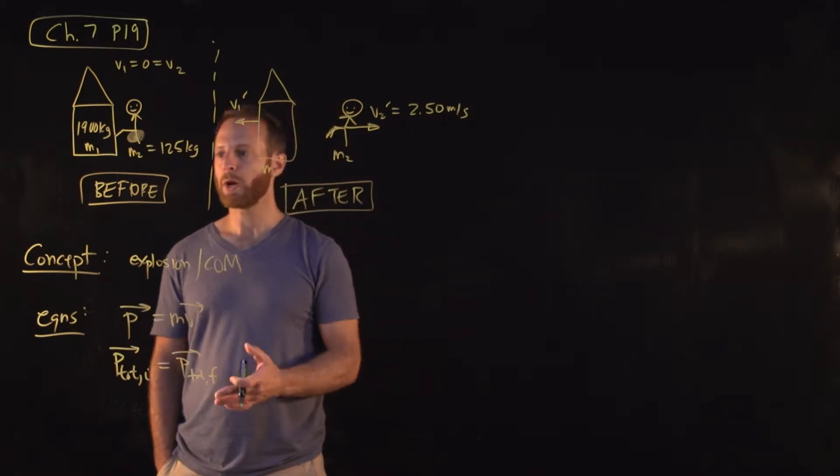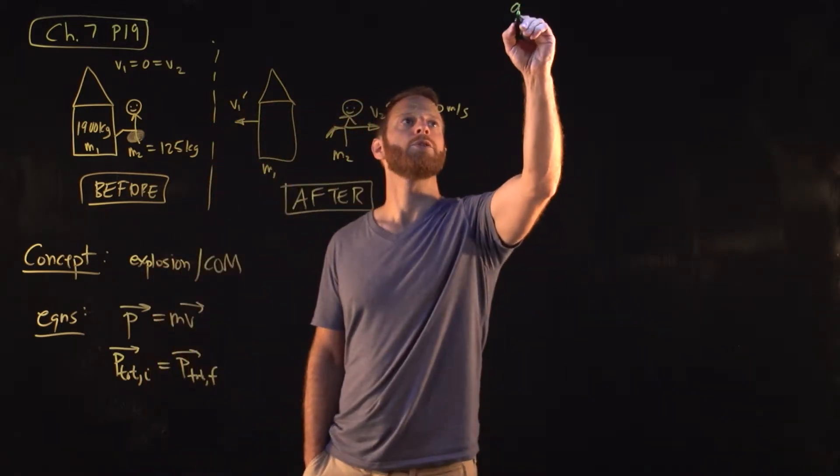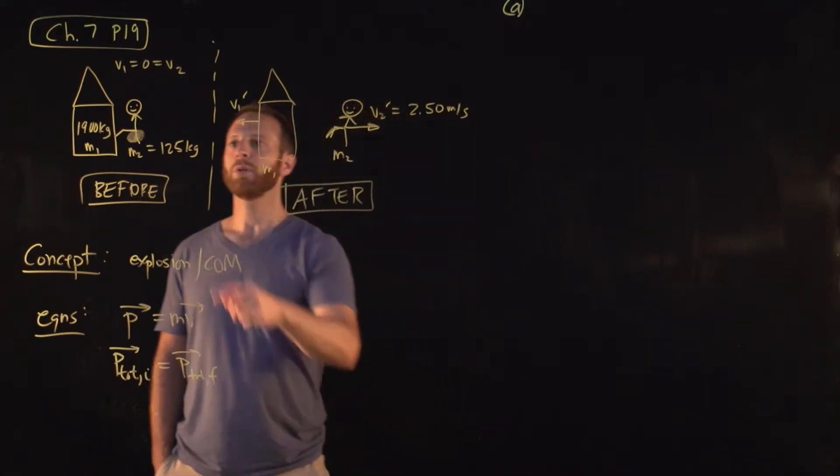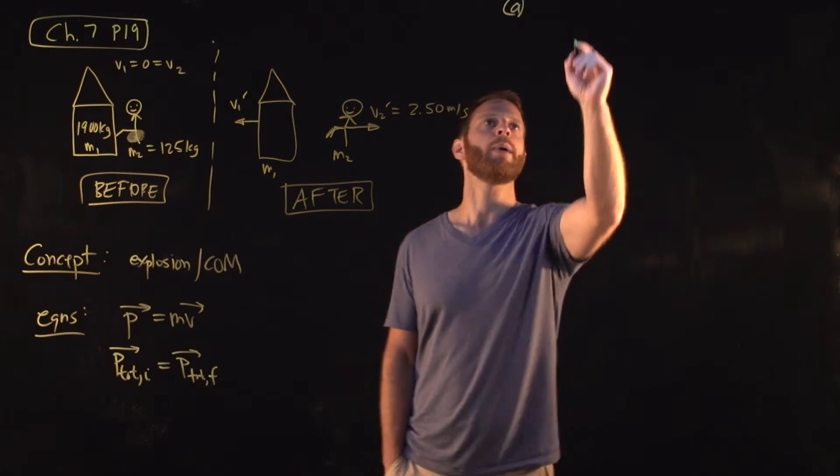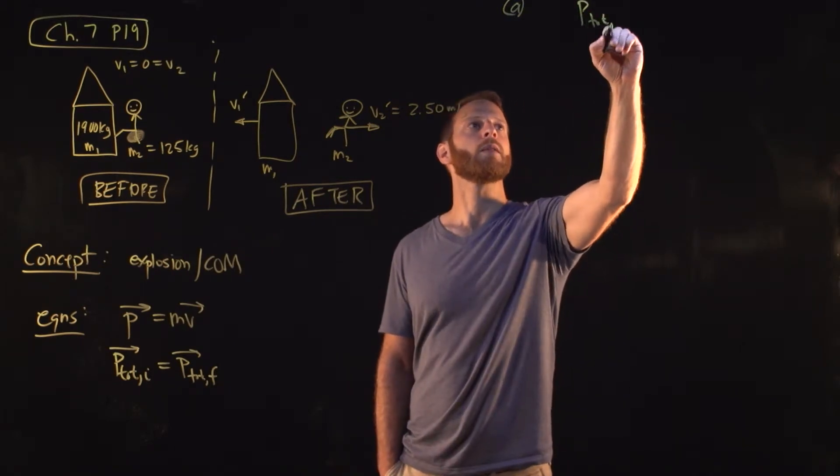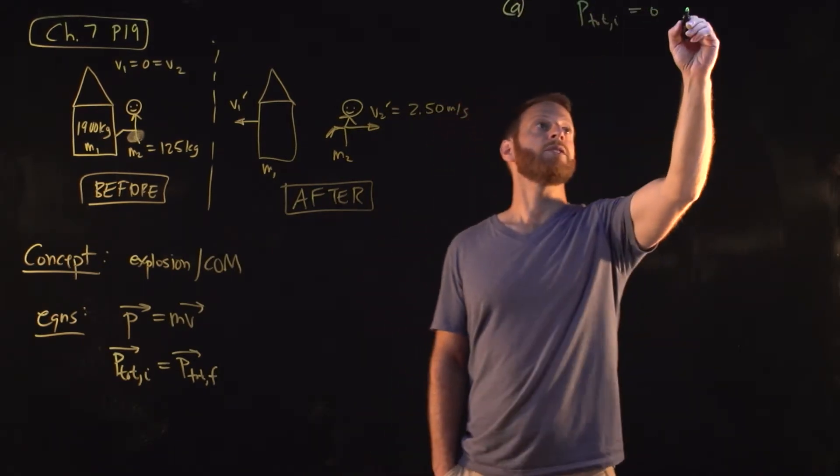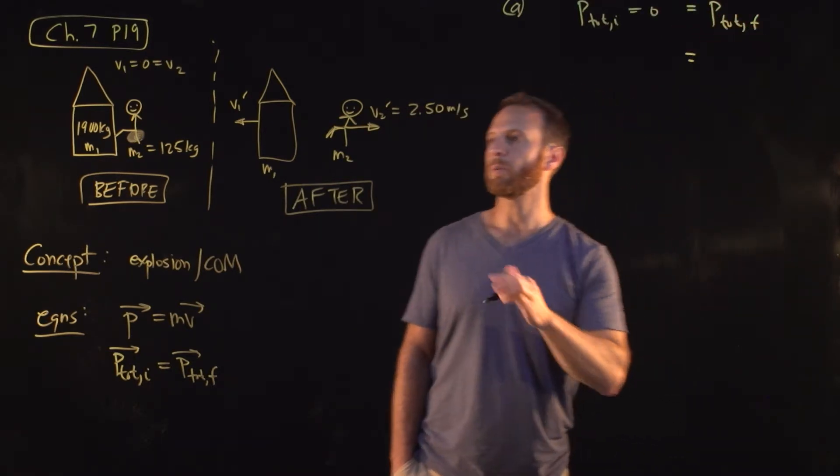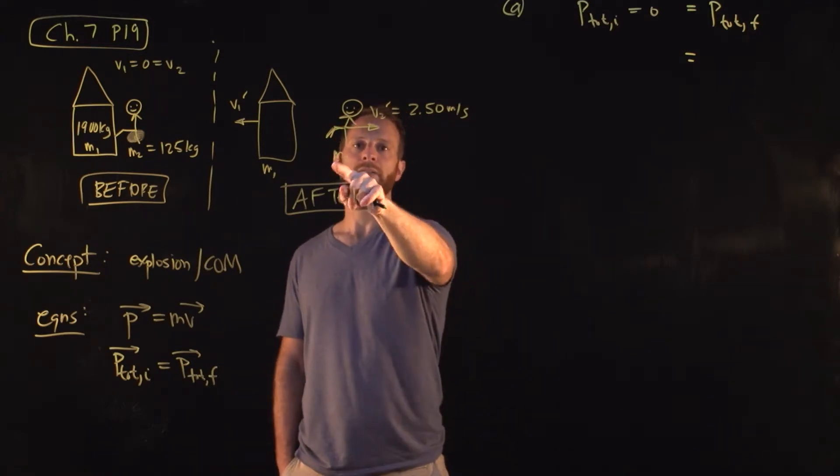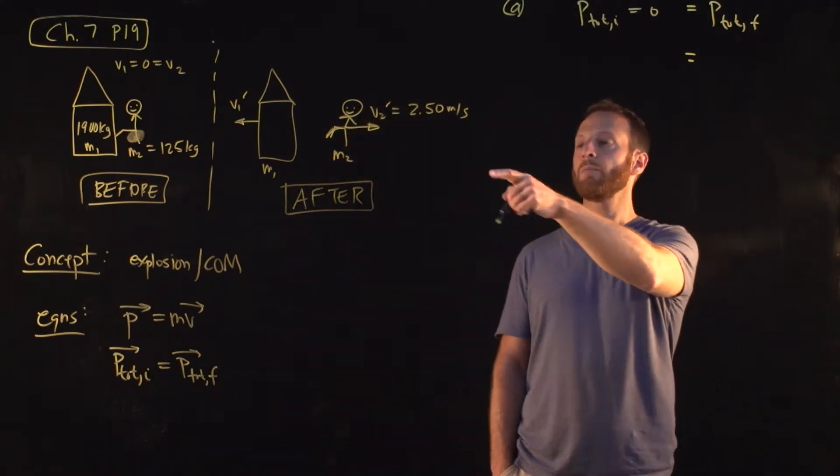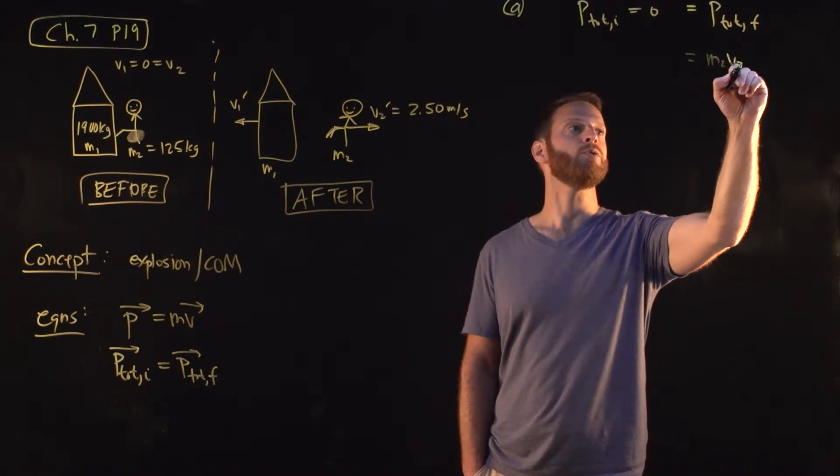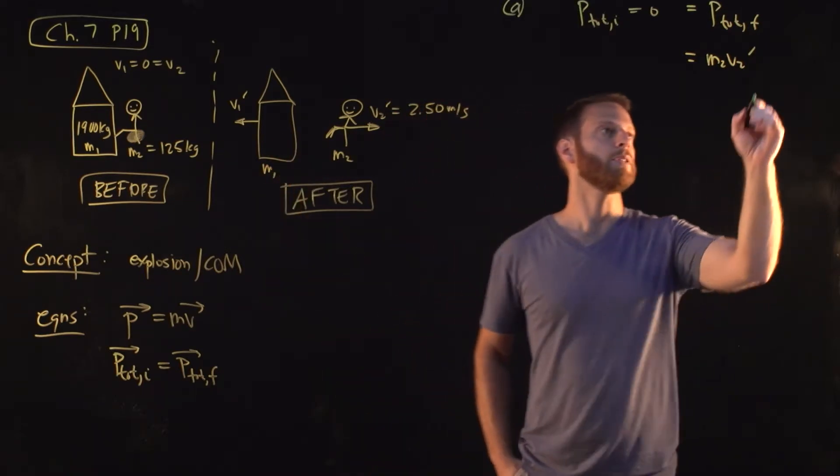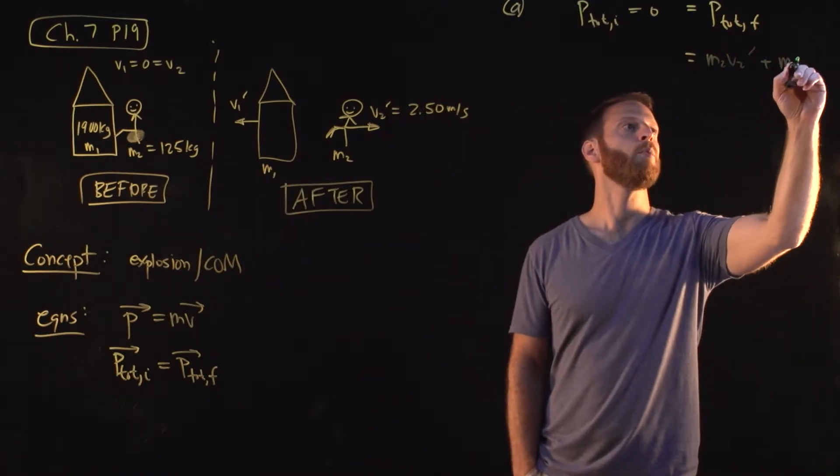All right, so let's go ahead and try to use this to do part A, to figure out what is V1 prime initially. We can write P1 plus P2, but look, we know that they're both zero, and so the initial momentum is zero. That means that this has to be equal to the total final momentum. And so what does that look like? We have one object, the person, with a mass M2 and V2 prime for the speed, so let's just write M2 V2 prime, and the mass of the space capsule and the velocity that it's moving, M1 V1 prime.